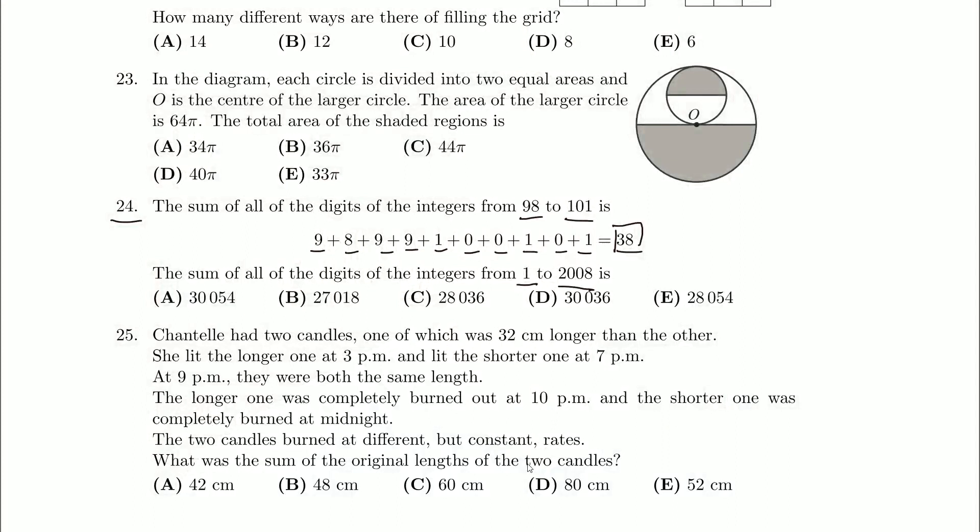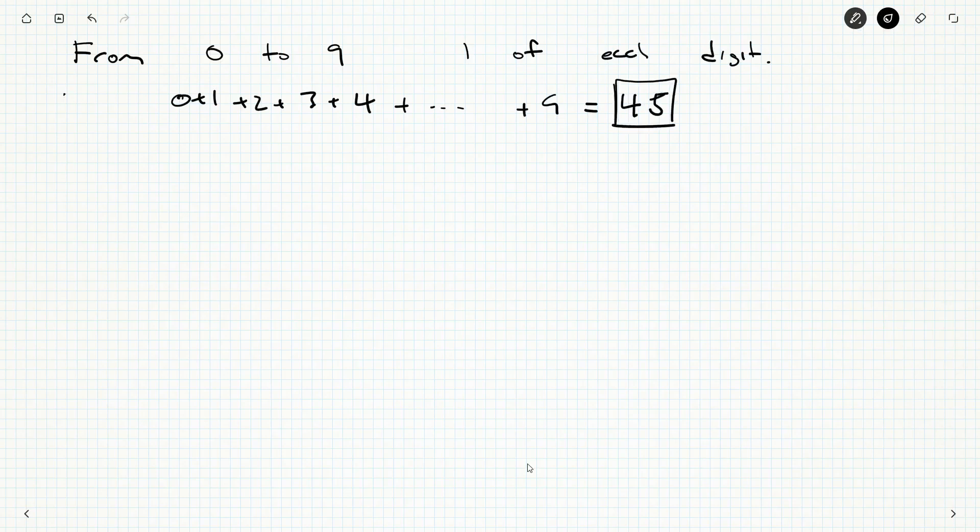But then the next 10 numbers, 20 up to 29, is also gonna have 0 to 9. And it's gonna have 10 2s. And the next group's gonna have 10 3s, 10 4s, 10 5s. So we're gonna focus on blocks of 10 or 100 or things like that. So from 0 to 9, we get 1 of each digit. We should probably figure out the sum of that. What's the sum of 0 plus 1 plus... It's 45. It's one of those numbers you tend to run into some of the single digits.